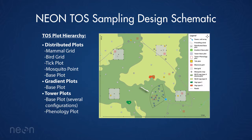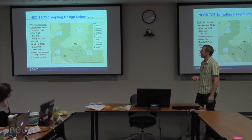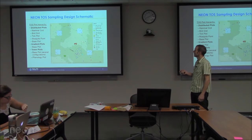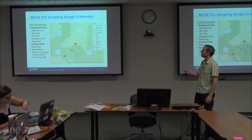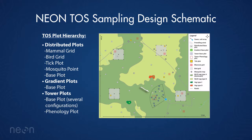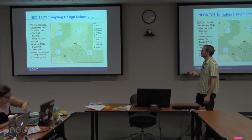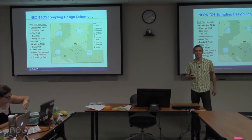To give you a sense of how this looks on the ground, we have here an idealized site with a hierarchy of plots. At the highest level we have distributed plots, gradient plots, and tower plots. There are also mammal grids and bird grids, and we try to co-locate those sampling units whenever possible. Mosquito points tend to be by themselves, but we won't get into those details.